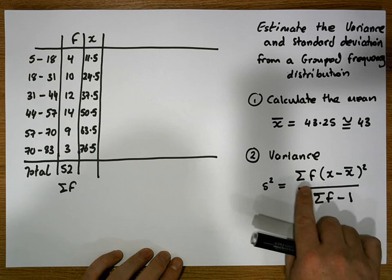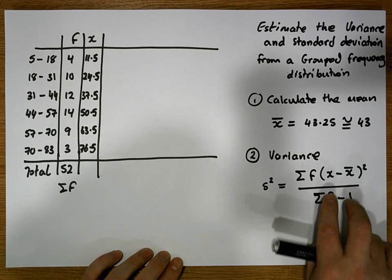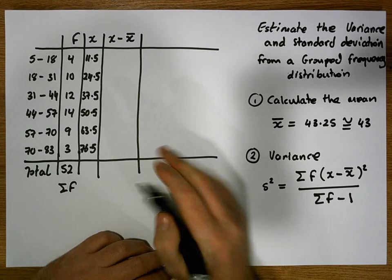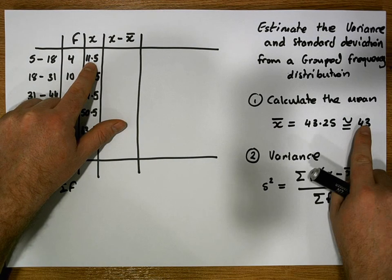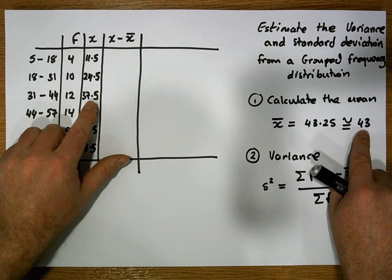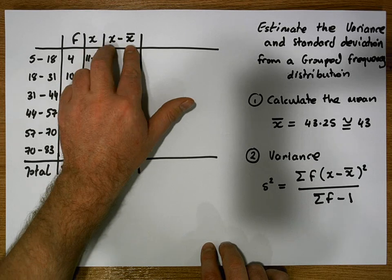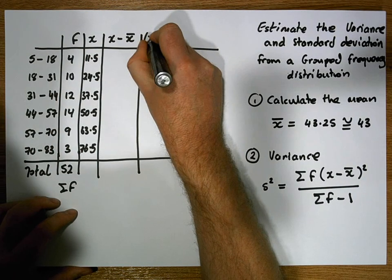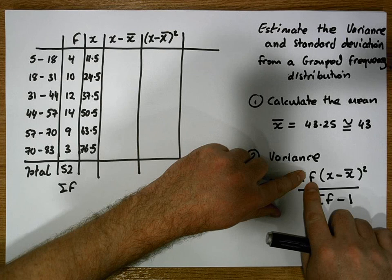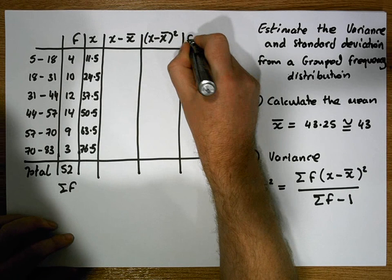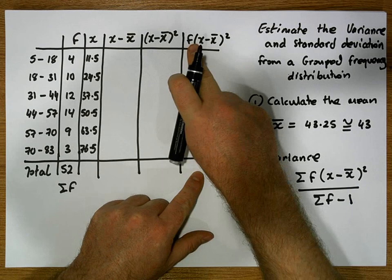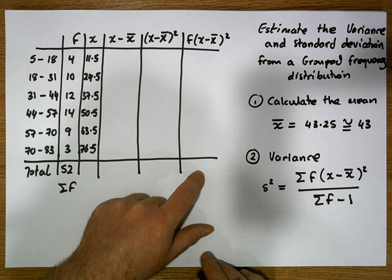Now we need to calculate the numerator. We'll do this in stages: first we'll calculate x minus x̄ — for each x observation we subtract the mean. Then we'll square those distances to get a column called (x − x̄)². Finally, we multiply each frequency by the squared distance to get f(x − x̄)², and then sum that column.